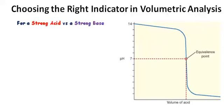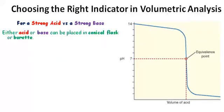We are going to look first of all at a strong acid versus a strong base. In this case, either acid or base can be placed in the conical flask or the burette.